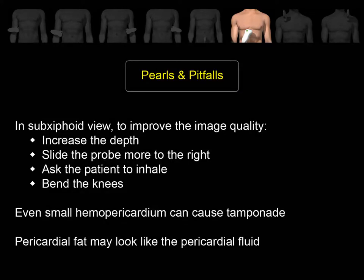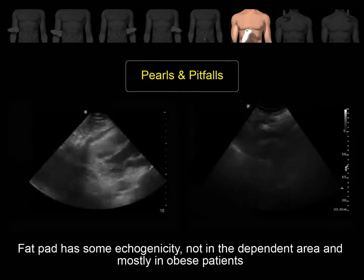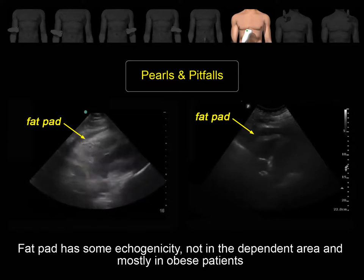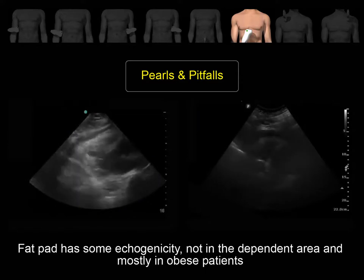In the sub-xiphoid view, increase the image depth because the heart is far from the probe. Sometimes you need to slide the probe to the right to avoid air in the stomach. If possible, ask the patient to inhale, which will bring the heart closer to the probe. Even a small amount of pericardial blood can cause pericardial tamponade in trauma because it develops very quickly, while patients with chronic pericardial effusion can tolerate much larger amounts of fluid. Pericardial fat pad looks like pericardial effusion, but it has some echogenicity, is not in the dependent area, and is mostly seen in obese patients.